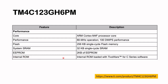There is also an EEPROM of 2 KB and an internal ROM loaded with the TIVA-Ware C series software. These are some of the features of the TM4C123GH6PM processor. I've taken this from the TI website, and you can download the datasheet from the link I've included in the description.